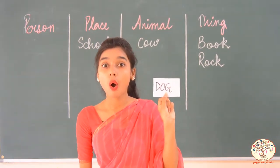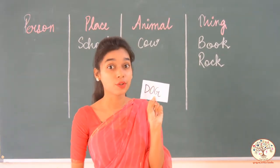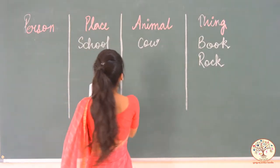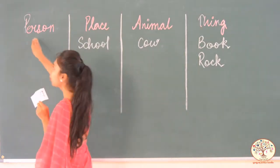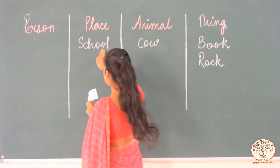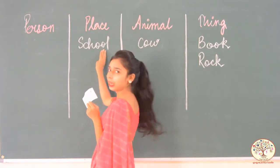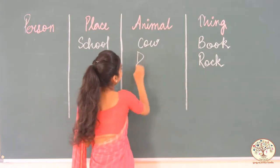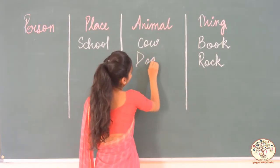What I have next? Dog. Dog is a name of a person? No. Is it a name of a place? No. It's an animal.